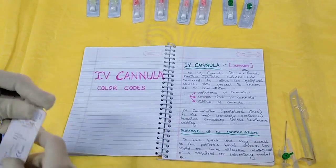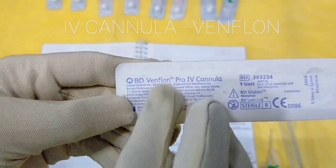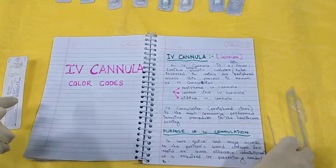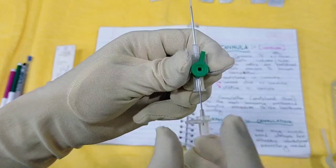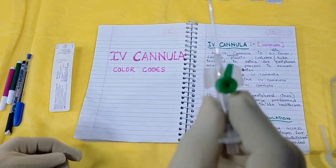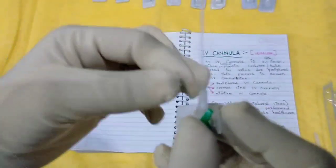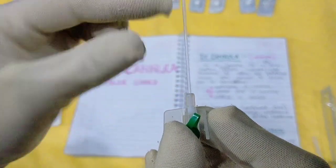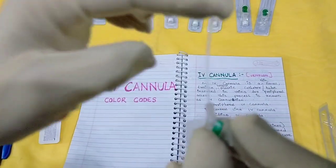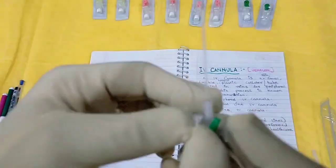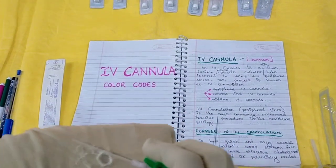So what is an IV cannula? IV cannula, which is sometimes called venflon, is nothing but a thin, small, flexible, hollow catheter or tube which is inserted inside the veins to gain peripheral access for therapeutic purpose. As you can see here, this is an IV cannula — it is hollow and it is flexible, not rigid. It is a flexible plastic catheter placed inside the person's vein to gain peripheral access for therapeutic purpose.